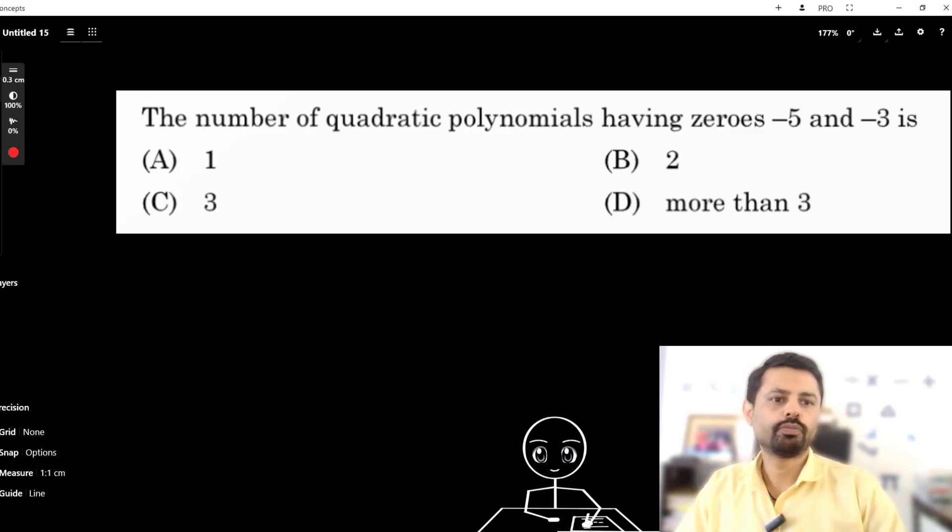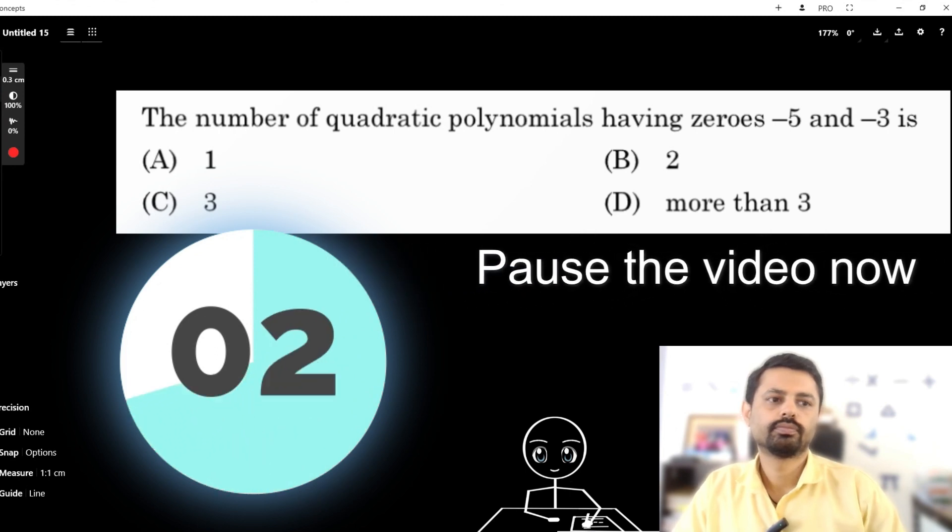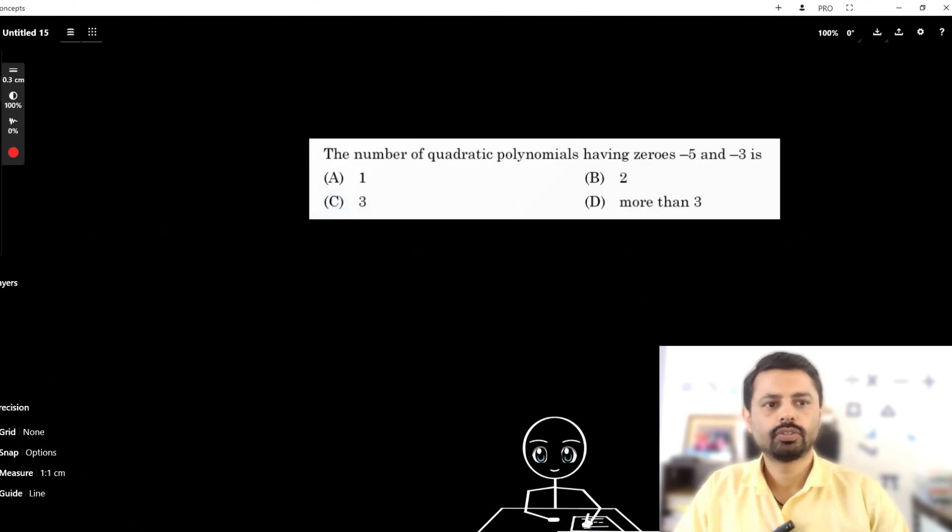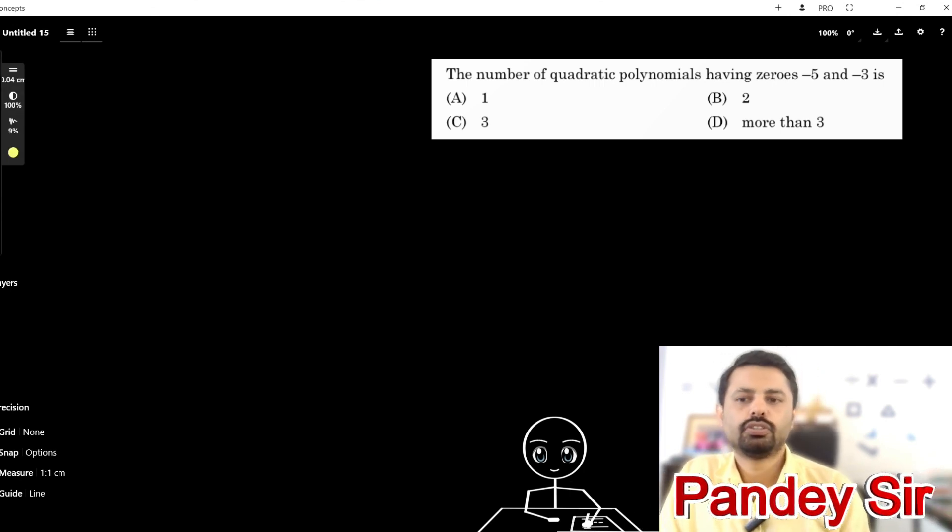The number of quadratic polynomials having zeros -5 and -3 is what? Now try to find out by yourself how to do it. They are saying a quadratic polynomial. You see, in a quadratic polynomial, how do we find a zero?